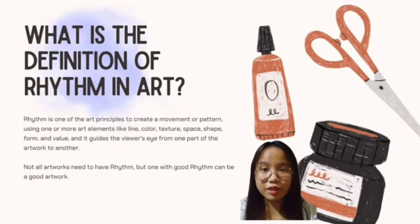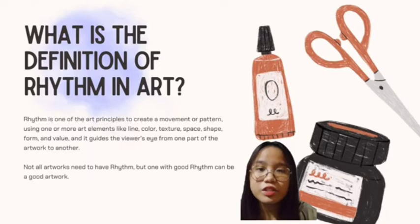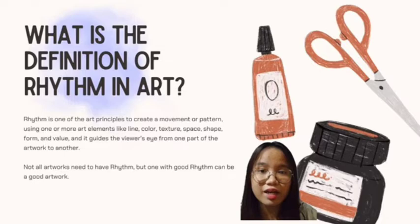What is the definition of rhythm in art? Rhythm is one of the art principles to create a movement or pattern, using one or more art elements like line, color, texture, space, shape, form, and value.